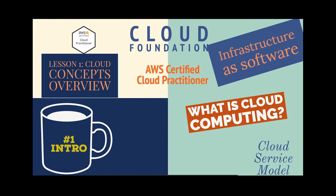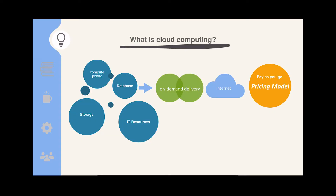Now let us look at the first lesson: the cloud concept overview of cloud foundation. In this lesson, we will learn what cloud computing is — basically the on-demand delivery of IT resources, including compute power, database, storage, and other IT resources in a pay-as-you-go pricing model. This concept is similar to the utility model we all use: if we want gas heating, we subscribe to a gas provider; if we want internet, we subscribe to an internet service provider on a pay-as-you-go model. In the same way, we think about cloud computing to deliver IT resources that you can lease from a cloud provider like AWS to launch your products and services.